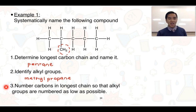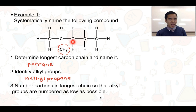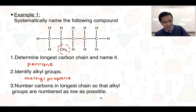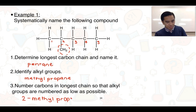Step three: number the carbons in the longest chain so that the alkyl groups are numbered as low as possible. We can number the carbons one through five from left to right, or in the opposite direction. Numbering from left to right gives this methyl group the lowest possible number. The methyl group is on the second carbon, so we assign it the name 2-methylpentane. Hyphens are used to separate numbers from letters.